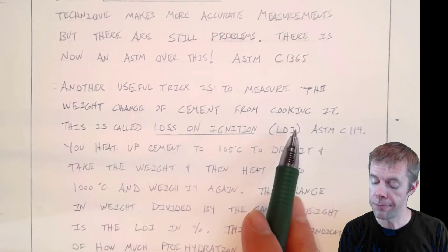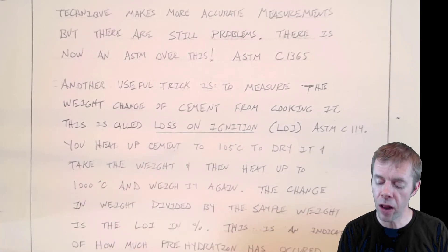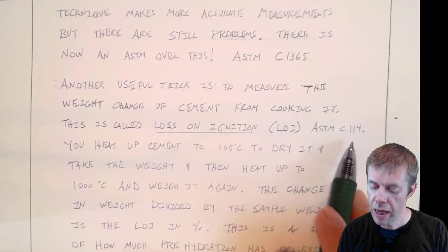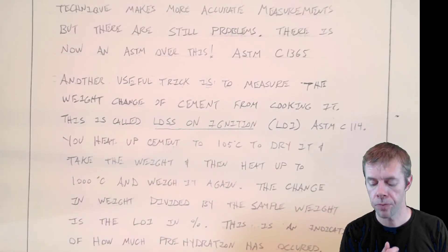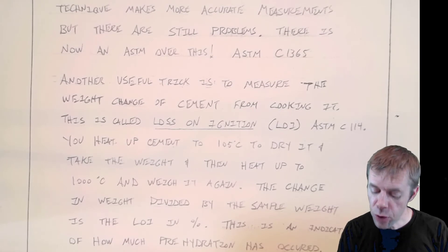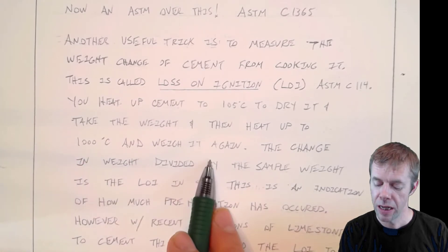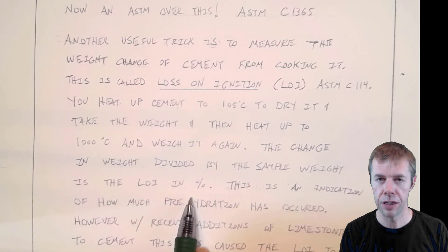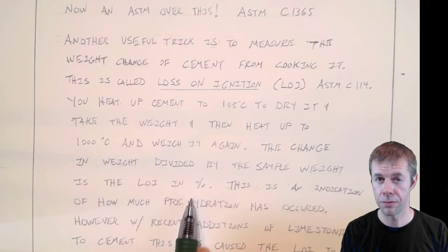Another useful trick is to look at the weight change from cooking it. The simplest test is called the loss on ignition test or LOI test, described by ASTM C114. You heat up the cement to about 105 degrees C to get any water out, then you take the weight. Then you heat it to about 1,000 degrees C and weigh it again. The change in weight divided by the initial sample weight is the loss on ignition in percent.